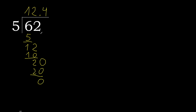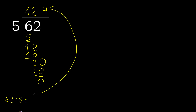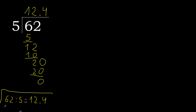0, therefore finish it. 62 divided by 5 is 12.4.